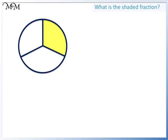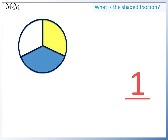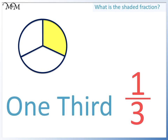What is this shaded fraction? We have one out of three equal parts. We call this fraction one third. One third fits into the whole shape three times.